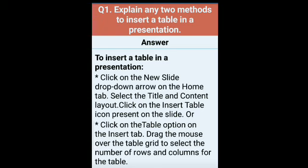First method: click on the new slide drop-down arrow on the home tab. Home tab के अंदर new slide का option मिलता है और उसके नीचे एक drop-down arrow होता है. We have to click on that option. Select the title and content layout — जब आप new slide के arrow पे क्लिक करते हैं तो उसका layout पूछता है. You have to click on title and content layout. Then click on the insert table icon present on the slide and the table will come.